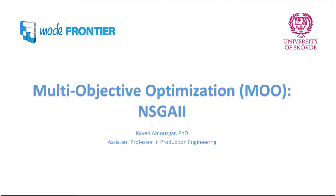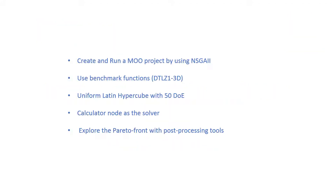In this video we will use modeFRONTIER to solve a multi-objective optimization problem using a well-known genetic algorithm called NSGA2. You will be able to create and run a modeFRONTIER project using NSGA2. We will use the benchmark function DTLZ1 3D, meaning we have three objectives. For the DOE we will use the uniform Latin hypercube with 50 design points, our solver will be a calculator node, and after running the project we will explore the Pareto front with modeFRONTIER's post-processing tools.